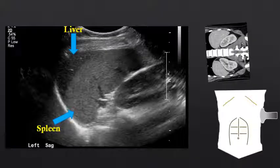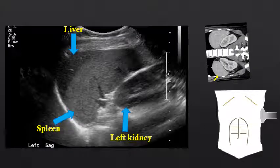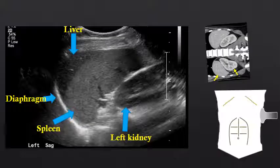We also see the spleen as this large organ in the left upper quadrant of the abdomen. Adjacent to the spleen, we can see the left kidney. Note the left kidney is hypoechoic to the spleen, and this is its normal relative echogenicity — the left kidney should always be hypoechoic to the spleen. Note we can see the diaphragm very clearly in this patient along the superior margin of the spleen and the liver.